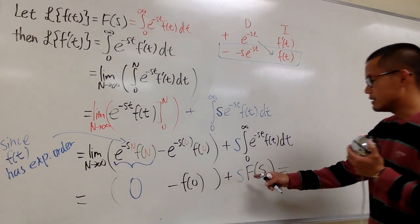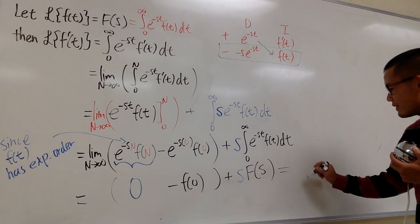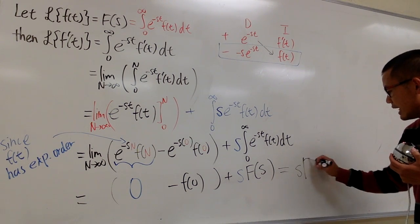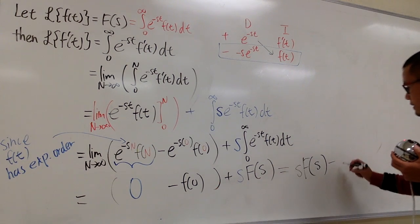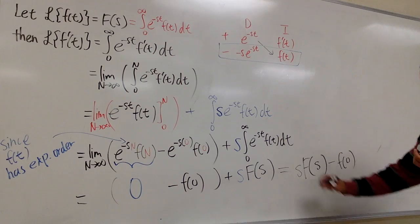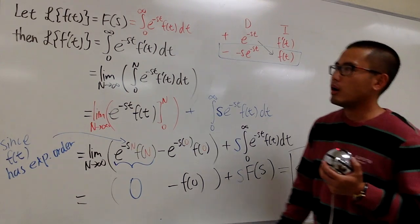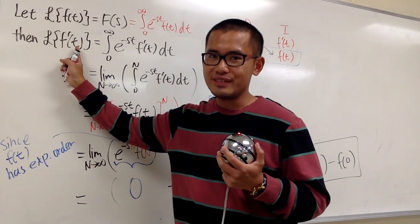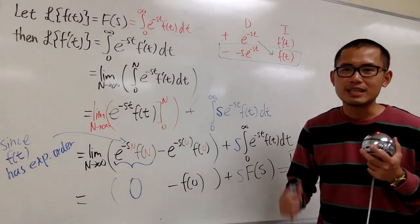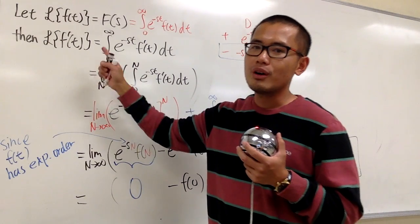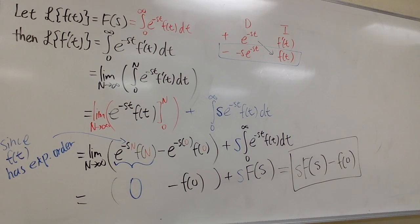At the end we have 0 minus f of 0, plus s times F of s. So the Laplace transform of the first derivative is s times F of s minus f of 0. This is how we do the Laplace transform of the first derivative. In the next video, I'll show you how to do the Laplace transform of the second derivative.